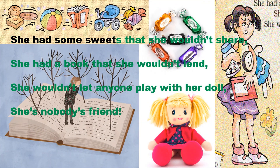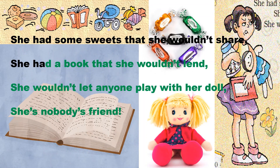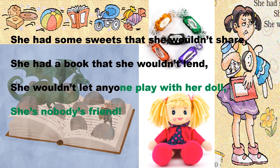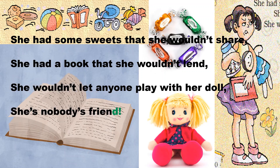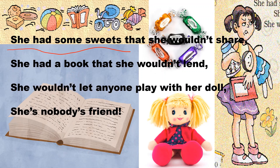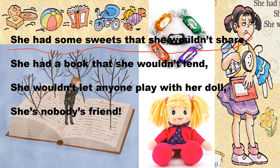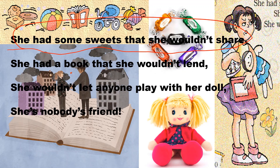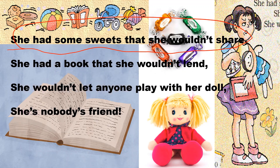She had some sweets that she wouldn't share. She had a book that she wouldn't lend. She wouldn't let anyone play with her doll. She is nobody's friend. So what does the poem want to say? She had some sweets but she doesn't share — she doesn't share.